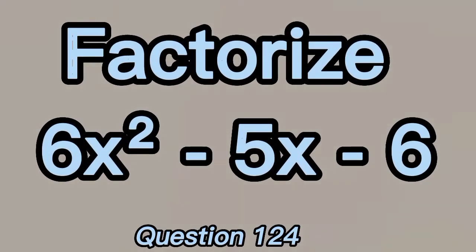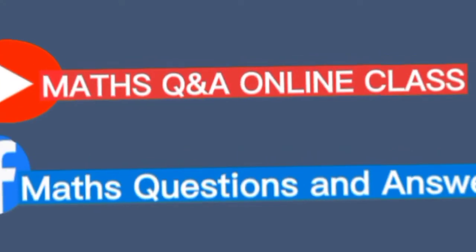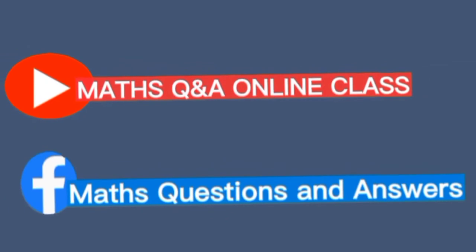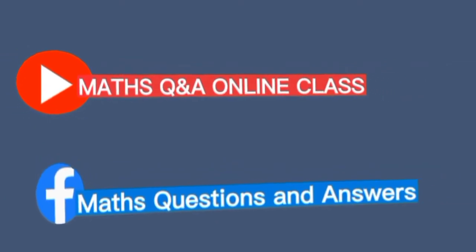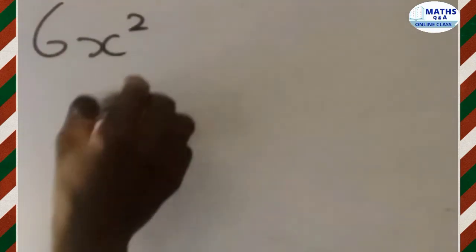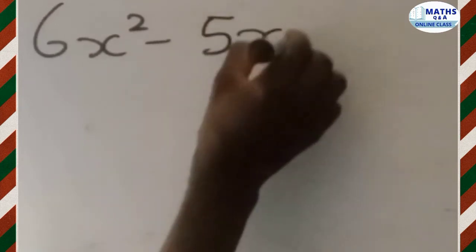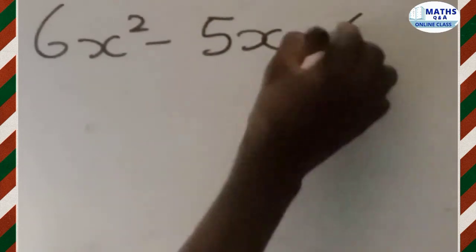Factorize 6x squared minus 5x minus 6. We are given 6x squared minus 5x minus 6.